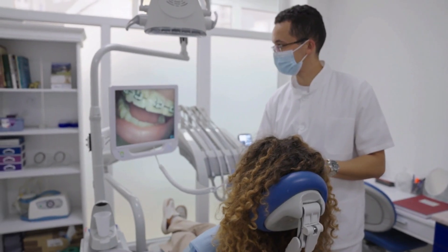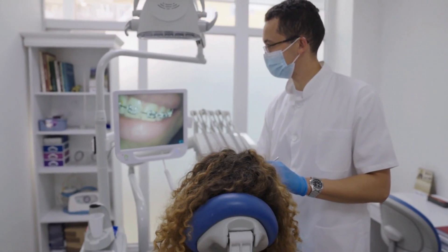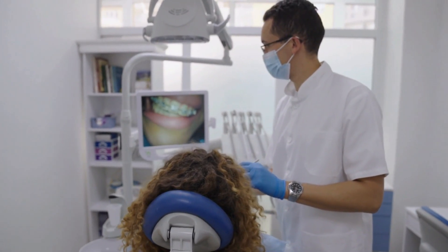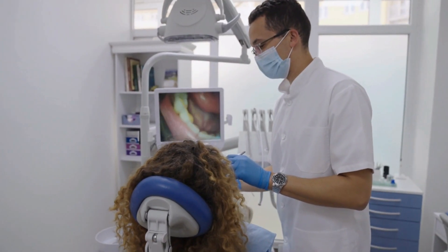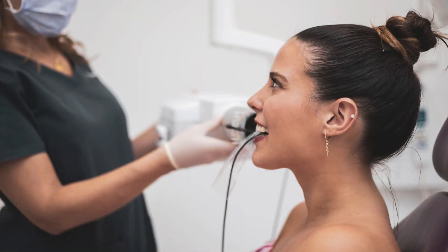Intraoral camera: a camera used to photograph and show the condition of a person's mouth, used to keep records before and after treatment. RVG: the part of the tooth visible from the outside does not always provide information about the general condition of the tooth. The inside of the tooth, the condition of the roots, and the condition of the bone can be understood by taking an x-ray. RVG is a system that transfers the x-ray image taken with less radiation to the computer screen.